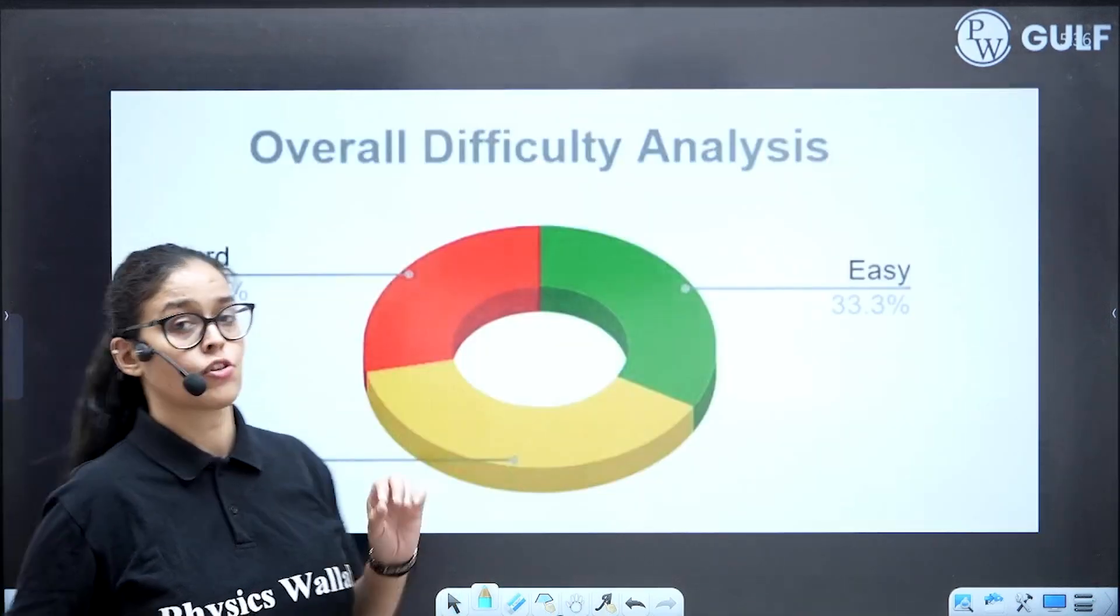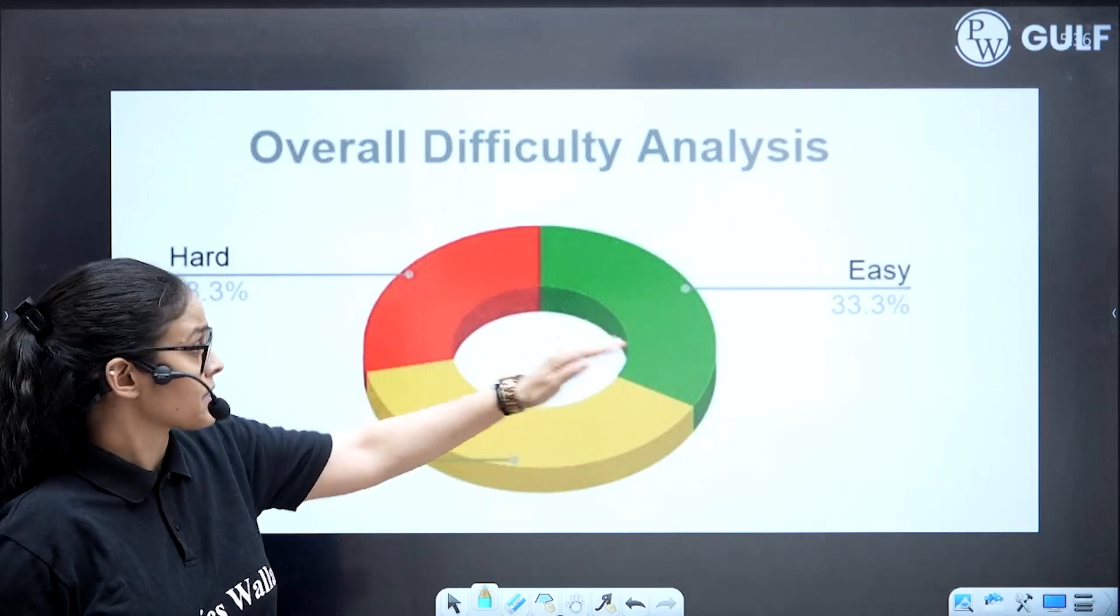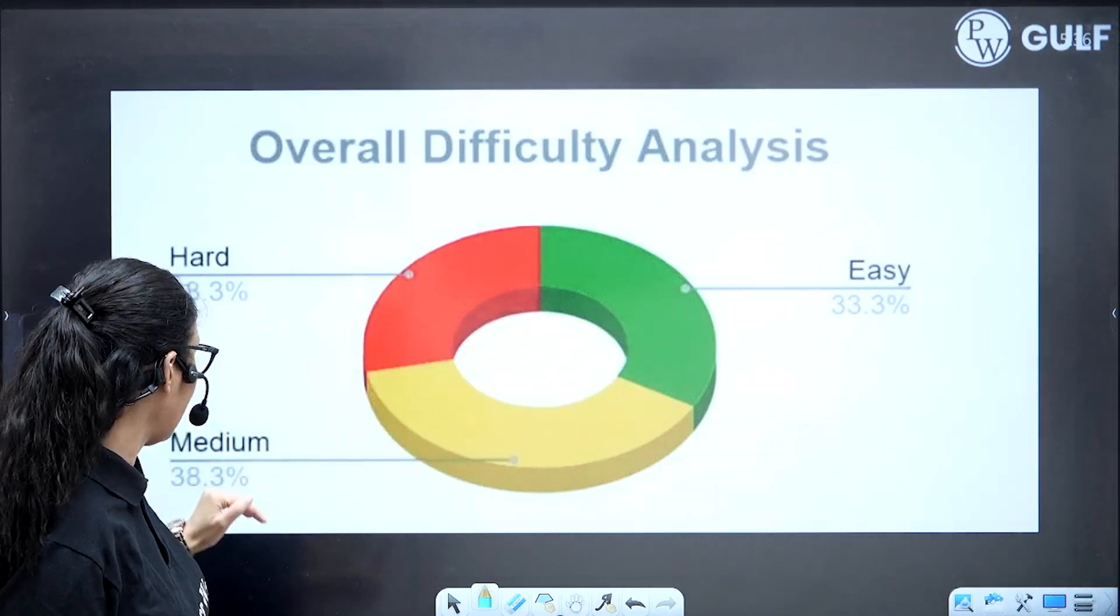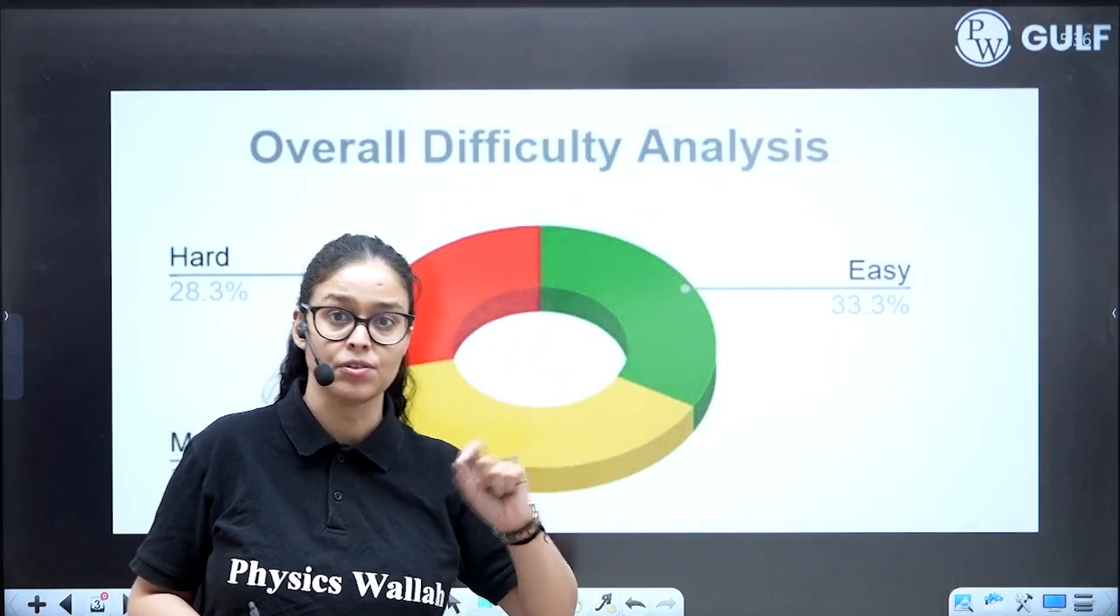When we talk about overall difficulty analysis of the full paper PCB, we know 33% easy, hard 28%, and medium 38%. So this was on average moderate to hard paper.